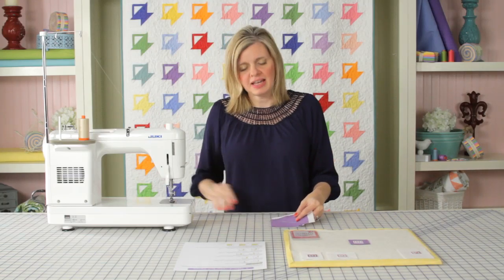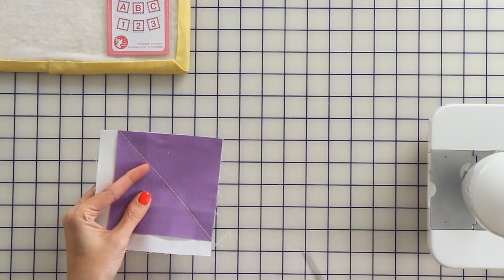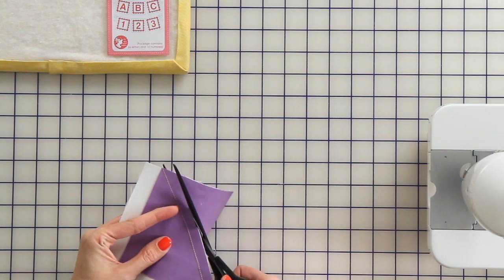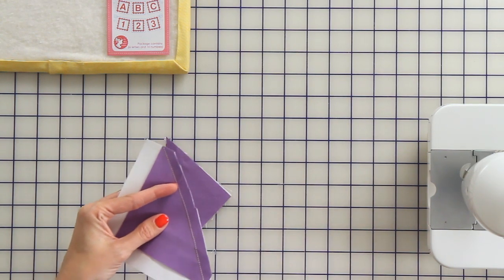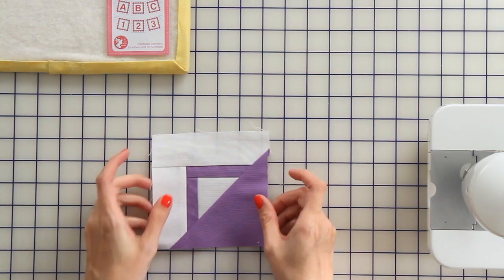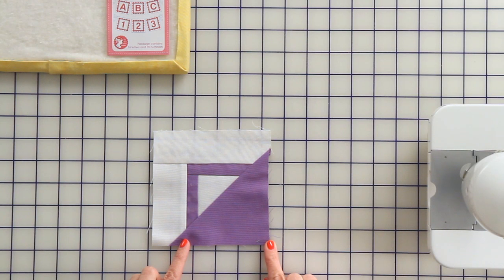Now take your block and cut a 1/4 inch away from your stitch line. Press towards your basket fabric, and your basket unit should measure 5 1/4 square.